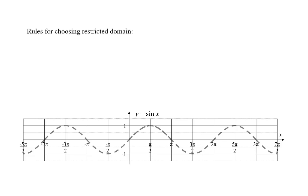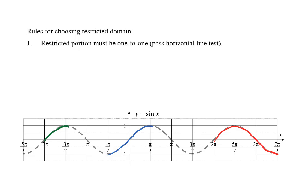There are some rules to help us decide which part to select. I'm going to look at three parts of the sine curve — here in blue, green, and red — that we might consider using as our restricted domain to get an inverse. The first rule says the restricted portion of the domain must give us a part of the function that is one-to-one; the function on this domain must pass the horizontal line test. The green and the blue are fine, but the red is not. We can draw a horizontal line across this red part and it crosses more than once, so the red part does not follow the first rule.